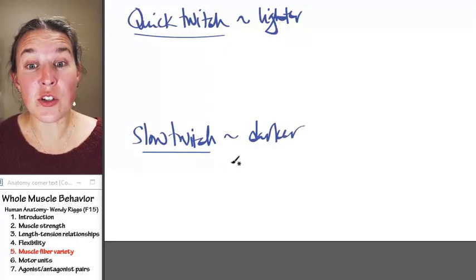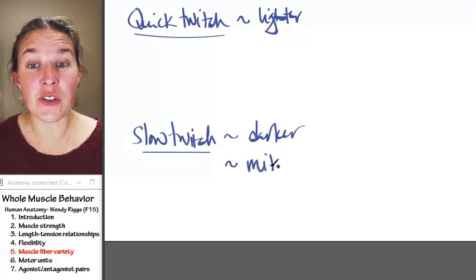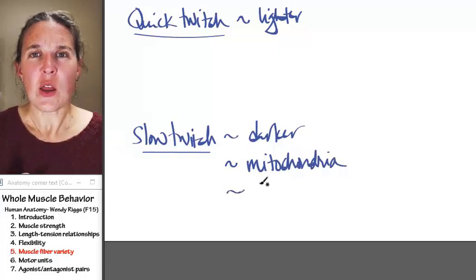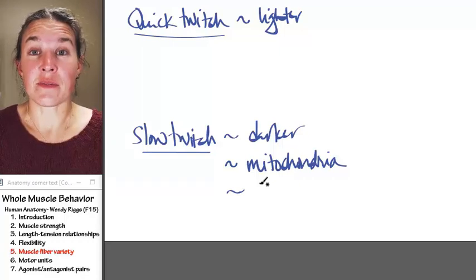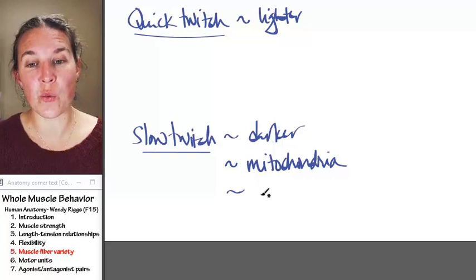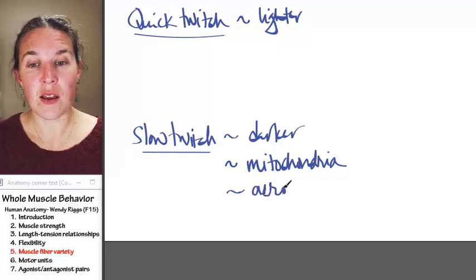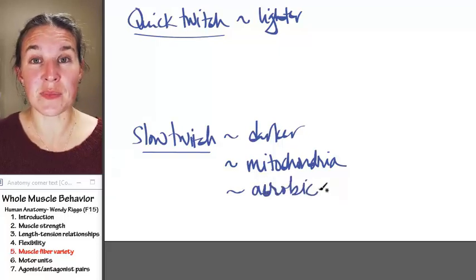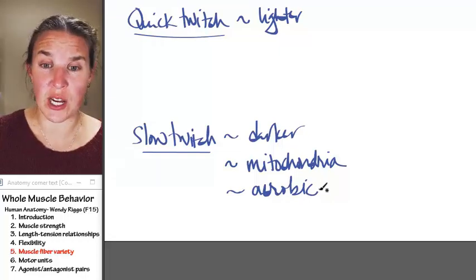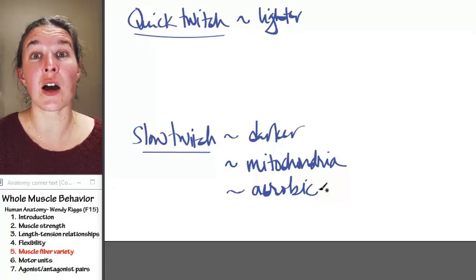Quick twitch fibers are lighter in color than slow twitch fibers, which are darker. Slow twitch fibers are full of mitochondria. What's the role of a mitochondrion? It goes through cellular respiration. And if it's going through aerobic cellular respiration, that means there's oxygen at the end of the electron transport chain, which means we're making a lot of energy.